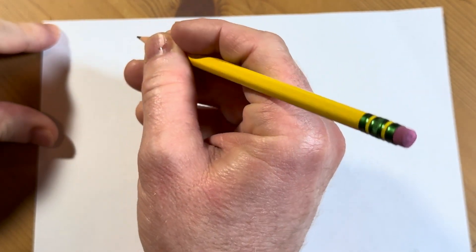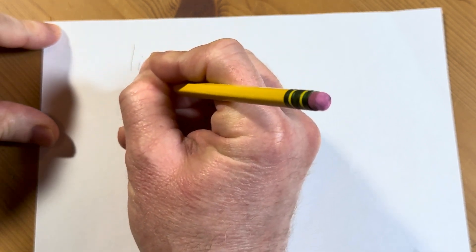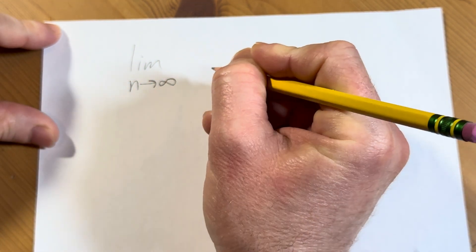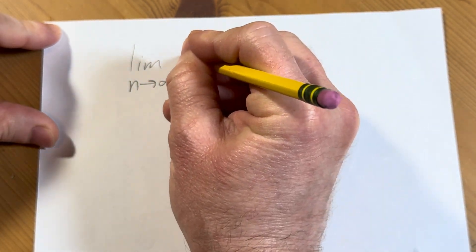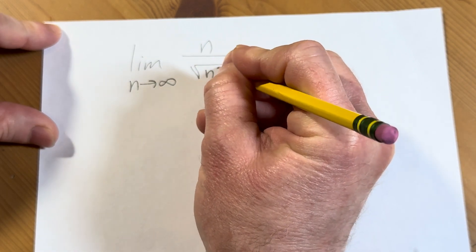Hello, in this video we are going to find a limit. So we're going to find the limit as n approaches infinity of n over the square root of n squared plus 1.